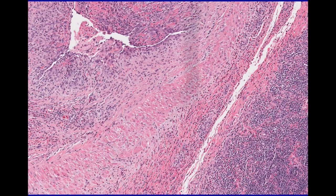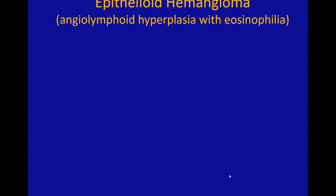Here's the vessel wall, and here's the kind of proliferation within the vessel and then extending outside the vessel. So the term I like to use is epithelioid hemangioma. In dermatopathology we often call it ALHE, for angiolymphoid hyperplasia with eosinophilia.